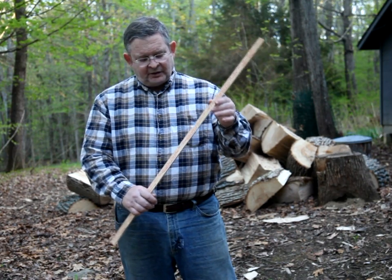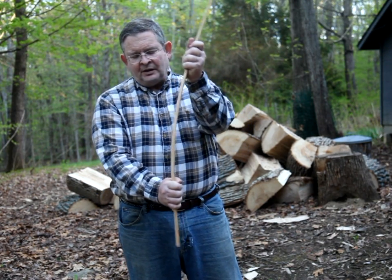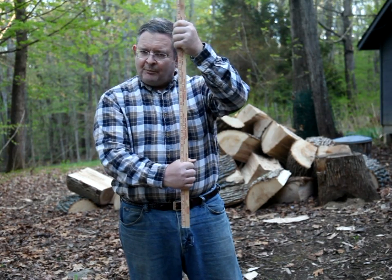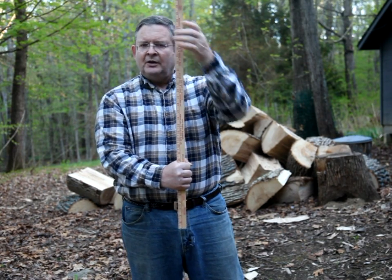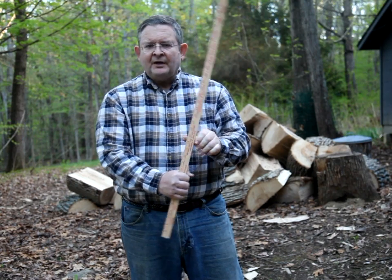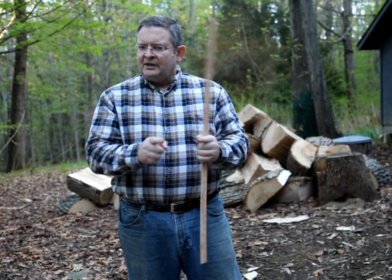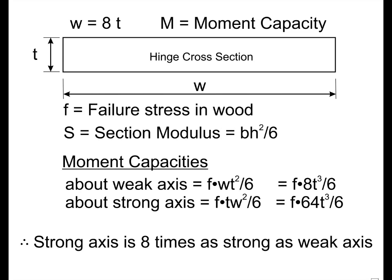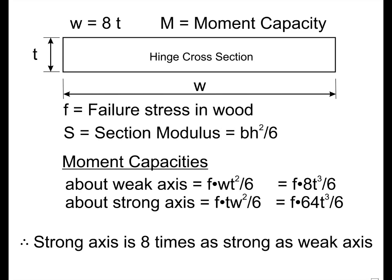Like this yardstick, the hinge is easy to bend across its thickness, but much harder to bend across its width. The typical hinge is 8 times as wide as it is thick. Applying engineering mechanics, the typical hinge will have around 8 times the strength to resist side lean that it does to resist falling in the desired direction.